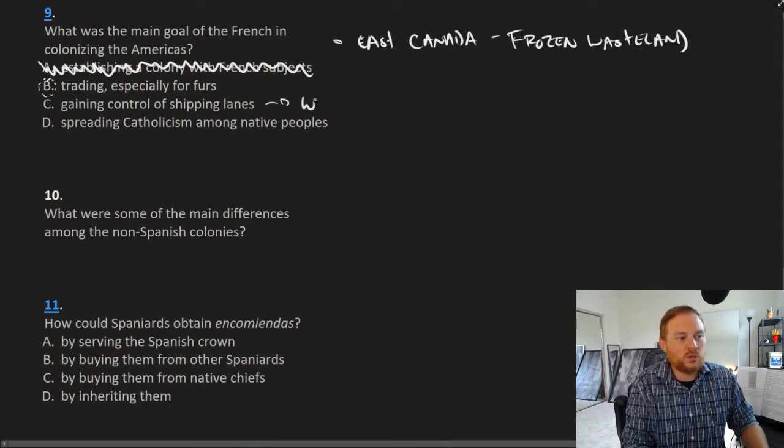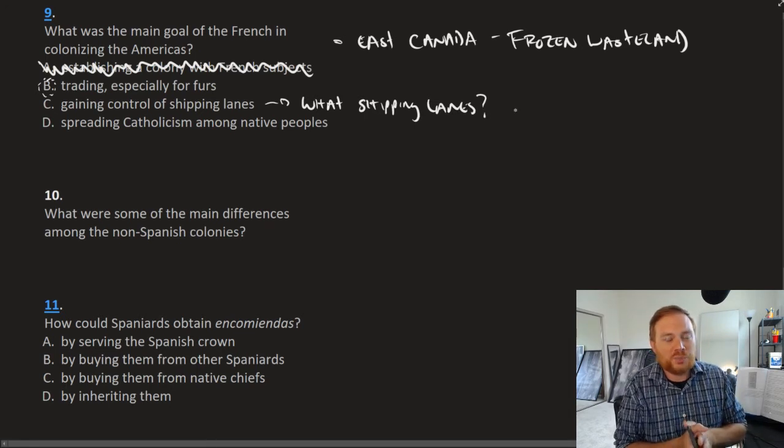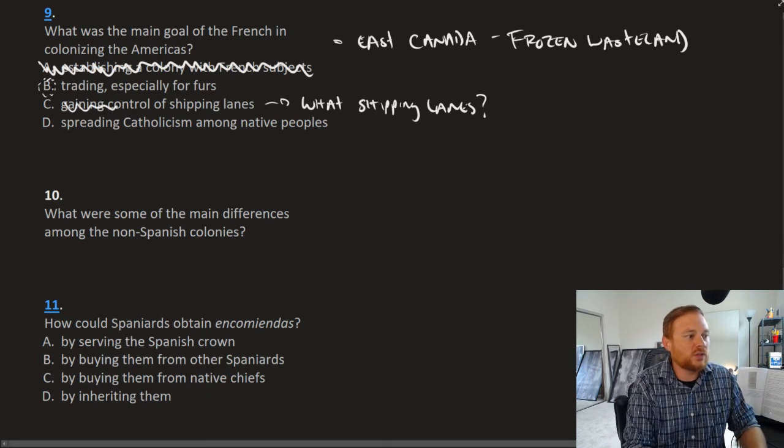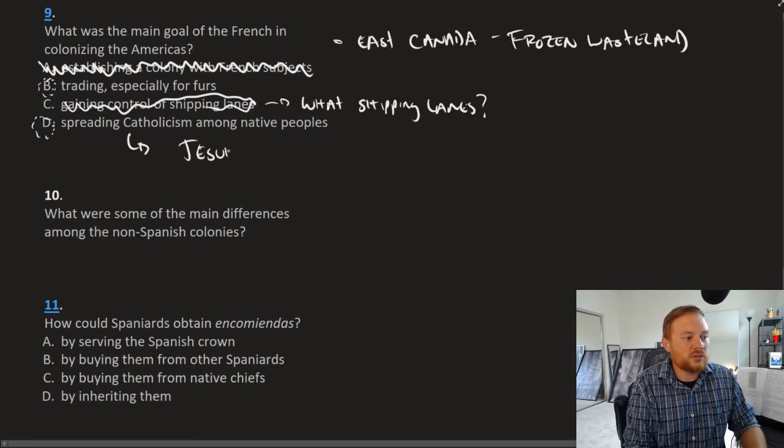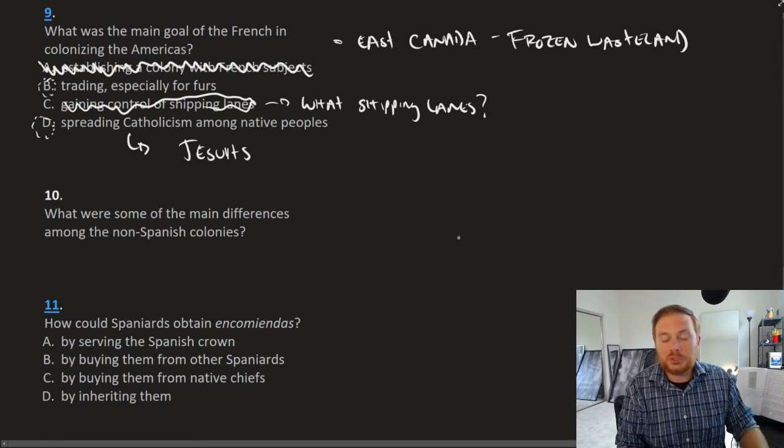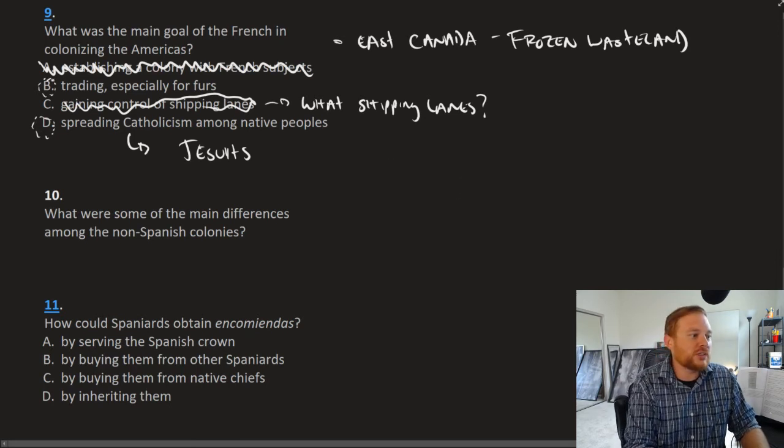Answer C, gaining control of shipping lanes. This doesn't make any sense. Shipping lanes, what shipping lanes? There is no trade going on, essentially, back and forth between the New World, at least not that the French want to take control of. And D, spreading Catholicism. This could be potentially a correct answer with the Jesuits. Now, had this question actually specified Jesuits, we could probably go towards answer D. But because it's mainly just talking about the French in general, the correct answer here is B.